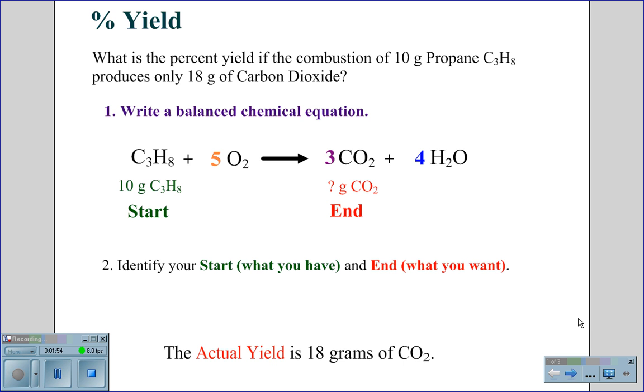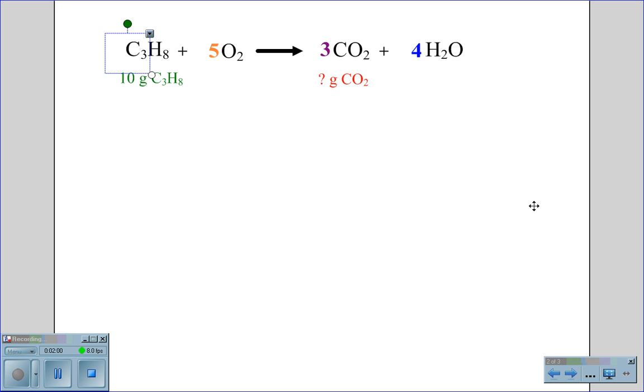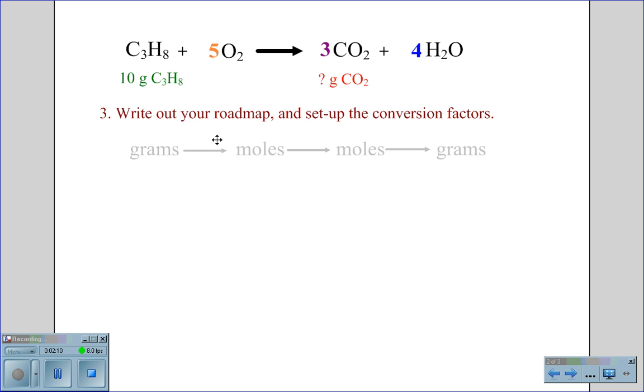Now that we have a balanced chemical equation and we've identified the start and end for this problem, we can now begin the process of solving the equation. We must write out the roadmap and set up the conversion factors.